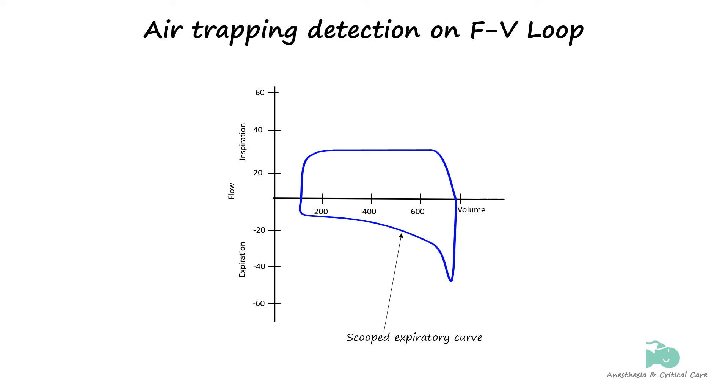There will also be increased end-expiratory lung volume leading to a shift of the entire loop to the right. The loop might appear to be stretched or widened horizontally compared to a normal loop.